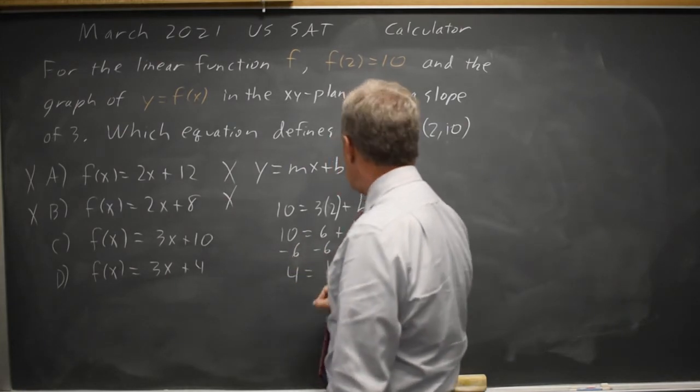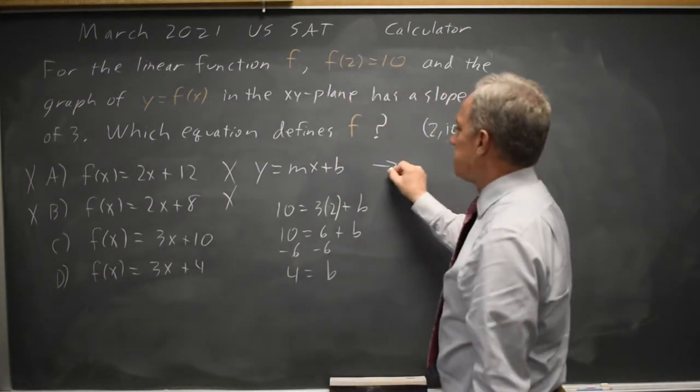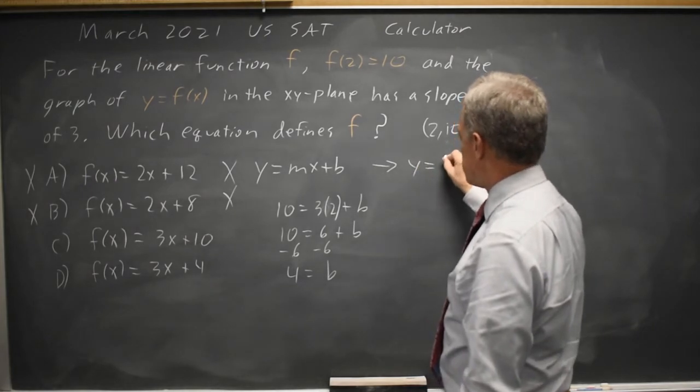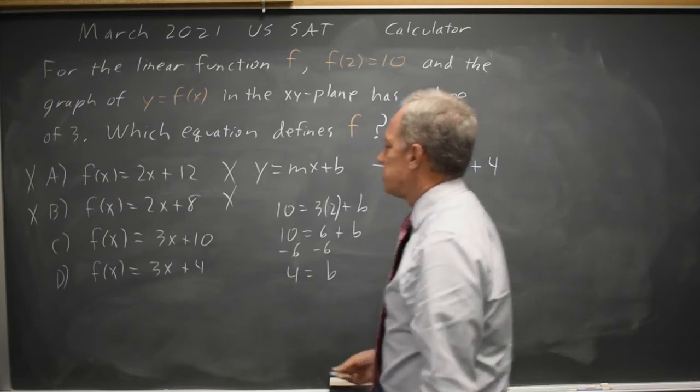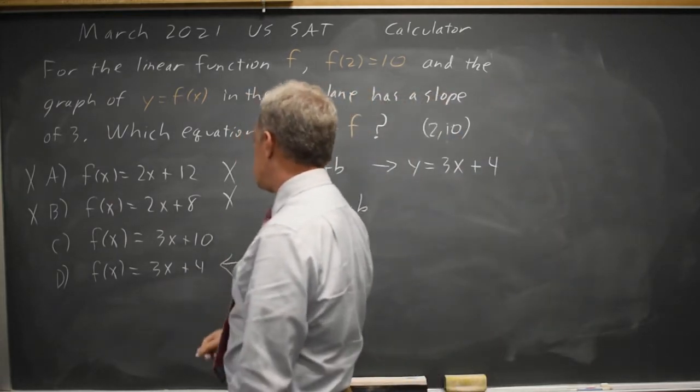I get 4 equals b. So y equals mx plus b becomes y equals 3x plus 4, that's choice d, not choice c.